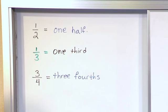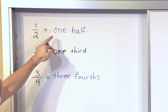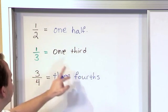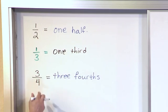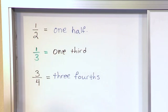So you should see a pattern by now. The first thing you write down is what the top thing is, right? So three here, one here, one here. The second part is basically what the bottom is. So four turns into fourths, three turns into third, and two turns into half like that.